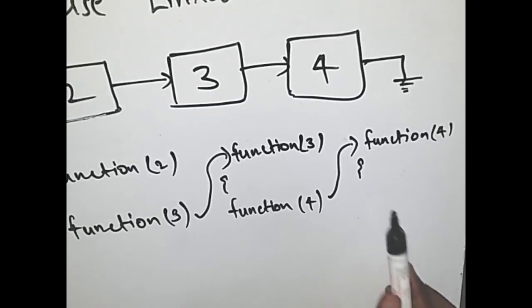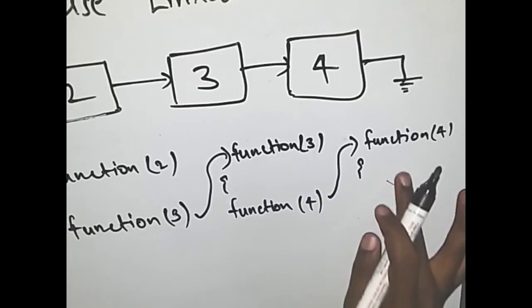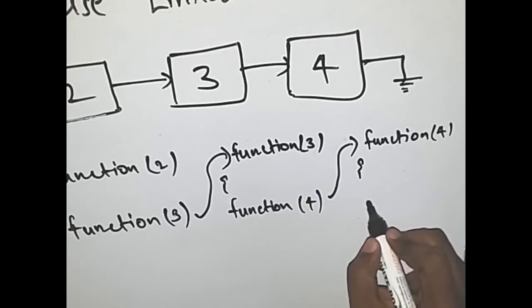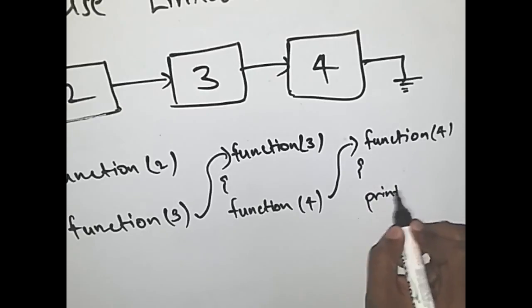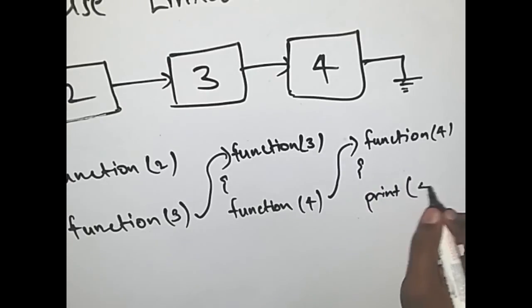What we see here is the next of the fourth node is equal to null. So we don't execute the if condition and we execute the printf condition and we print the data in the fourth node.